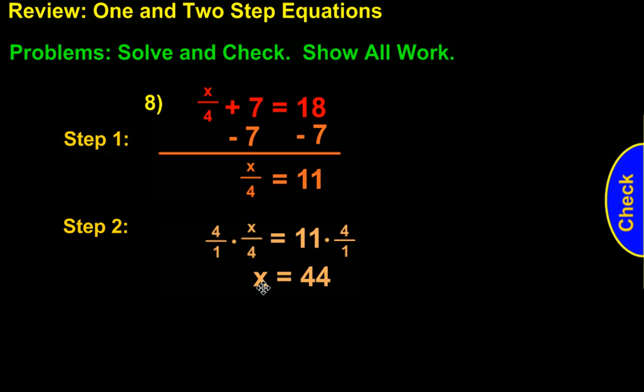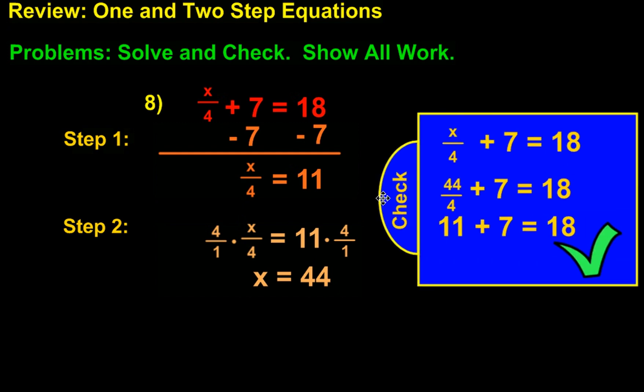Now we have x equals 44, and we're going to plug it back into the original equation for our check. The original equation was x over 4 plus 7 equals 18. If we take 44 over 4 plus 7, this reduces to 11. 11 plus 7 equals 18. So the check works.